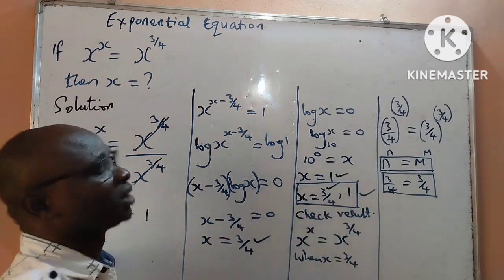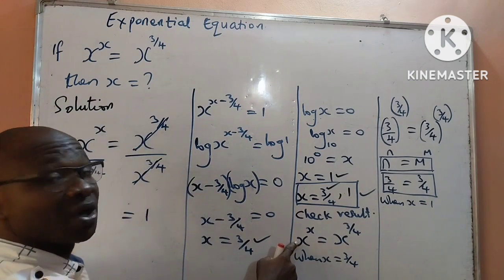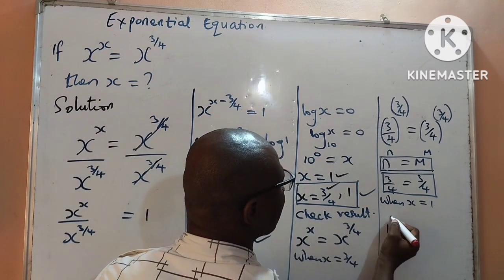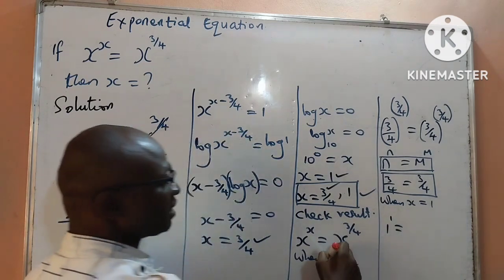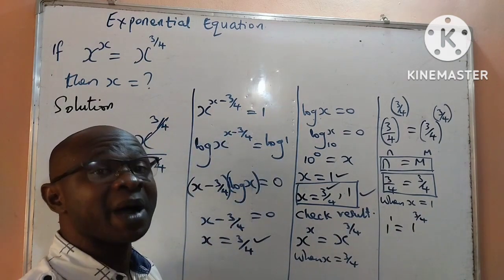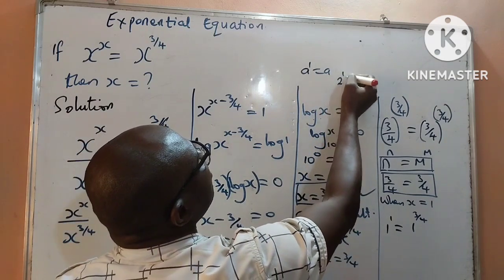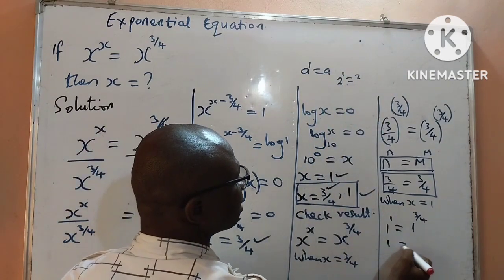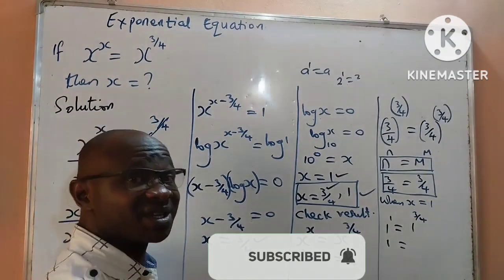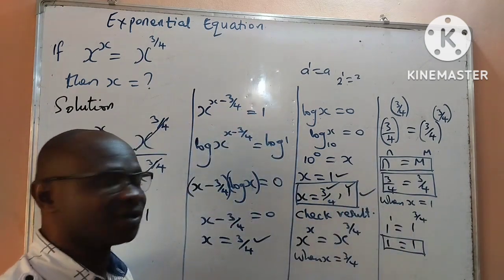We check for when x is equal to 1. Substituting, x to the power x becomes 1 to the power 1, and the right hand side becomes 1 to the power of 3 over 4. Anything raised to the power of 1 is itself, so 1 to the power 1 is 1. And 1 raised to any power is still 1, so both sides equal 1. This justifies the second value of x.